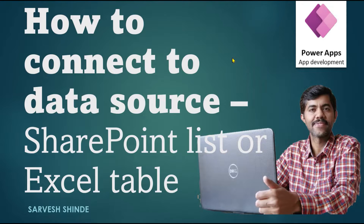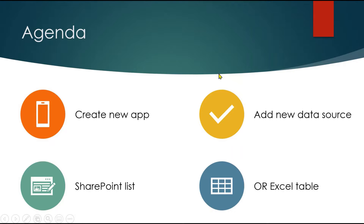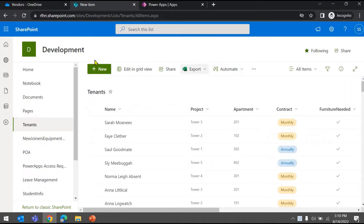In this video we will be looking at how we can connect to a specific data source from our apps. We'll start with a blank app and we'll try to connect to a SharePoint list or a table in an Excel file. We'll see how we can add the data source and connect to a sample list and also a sample table in an Excel file.